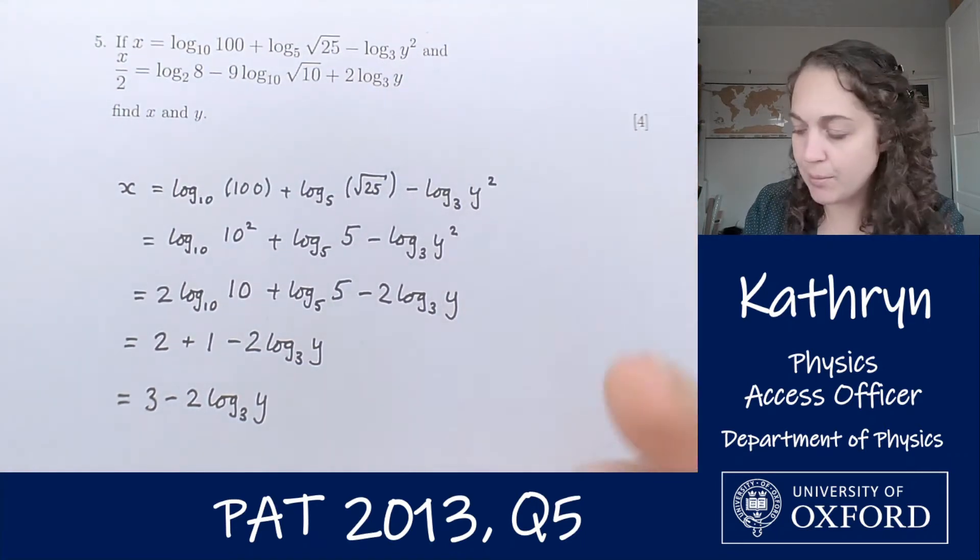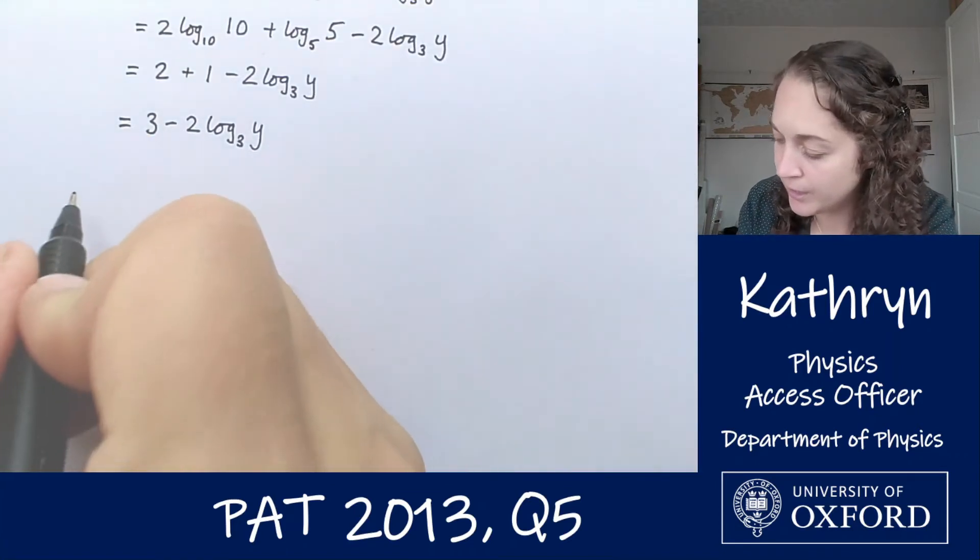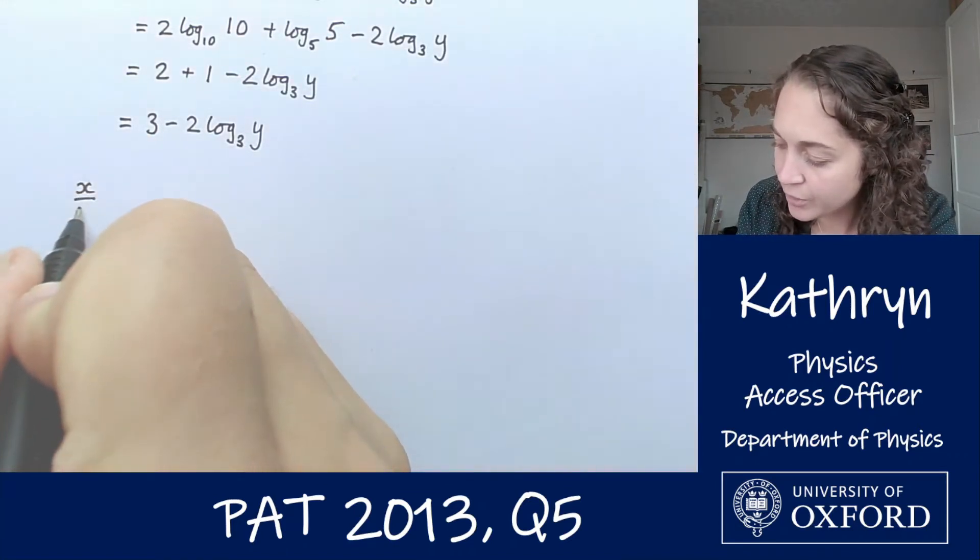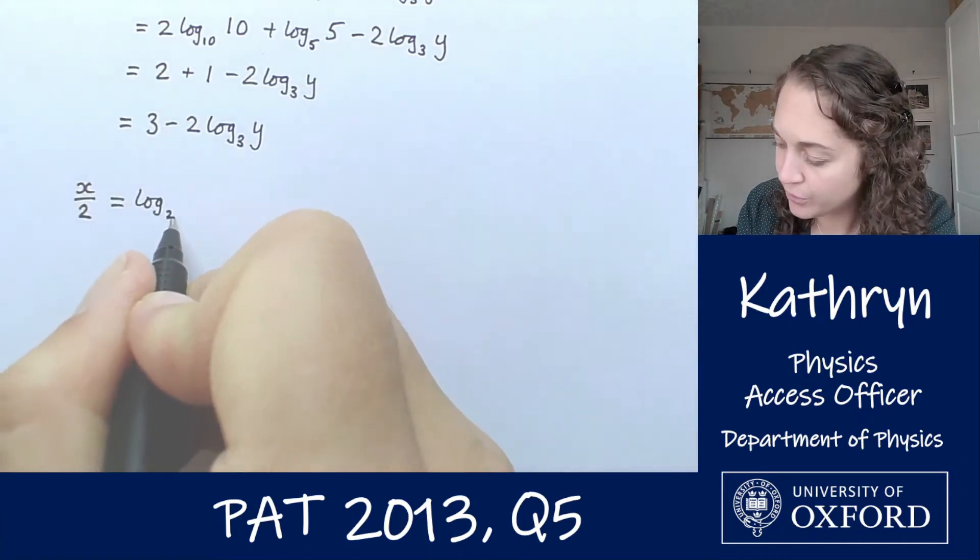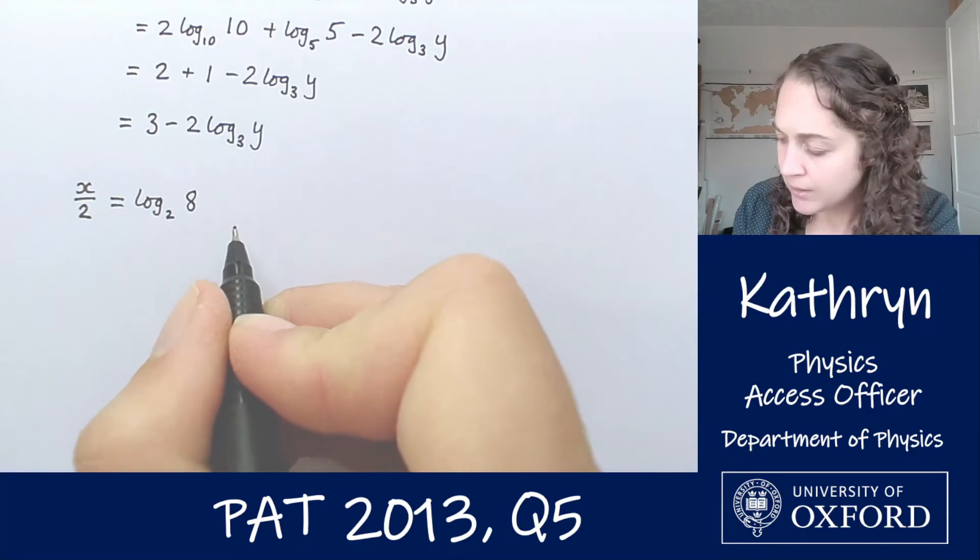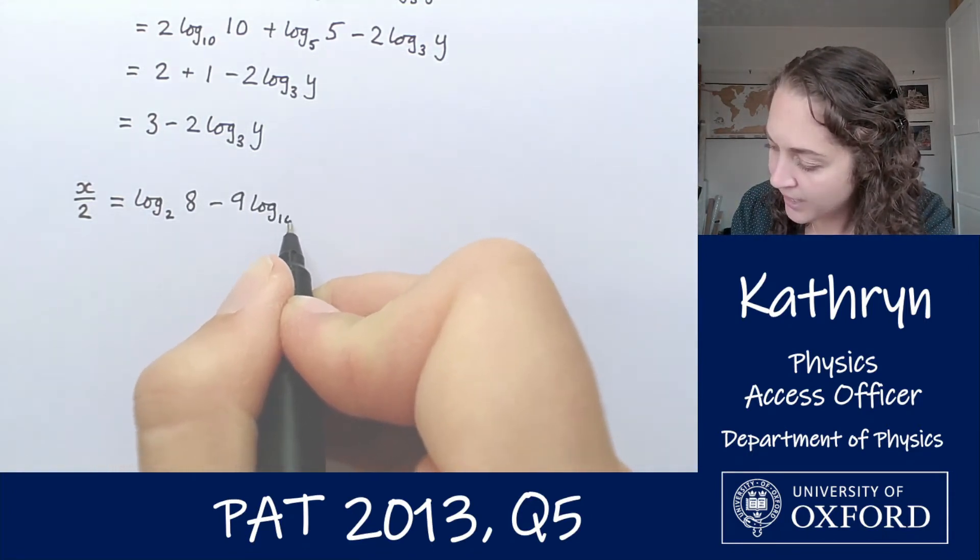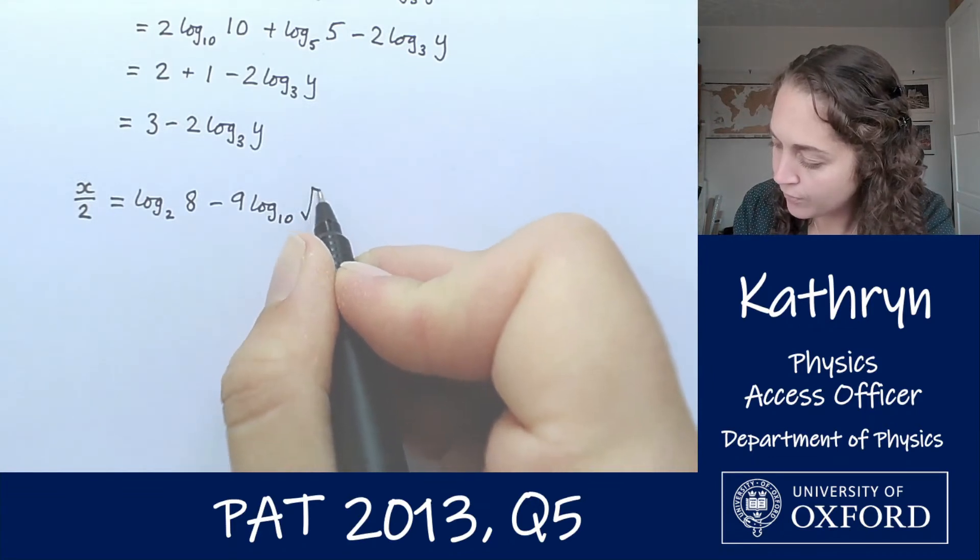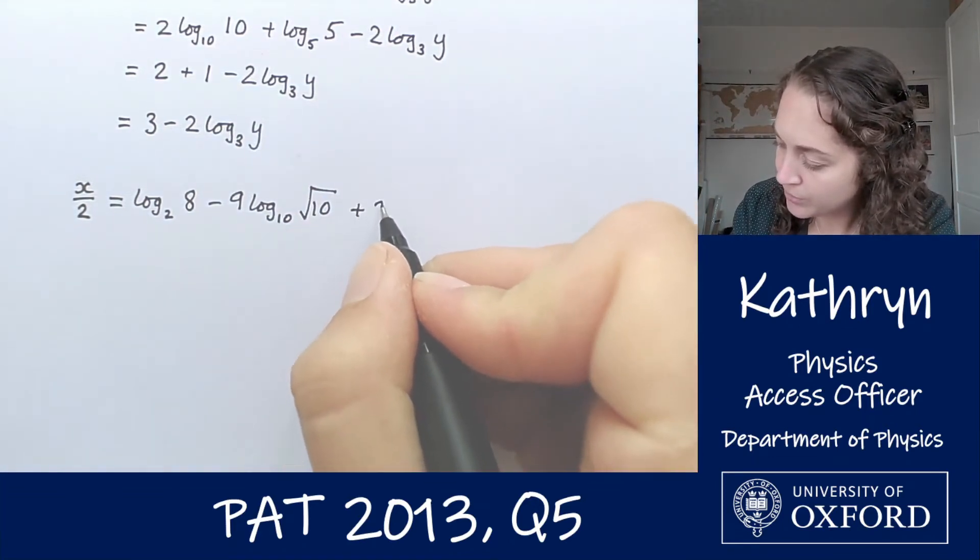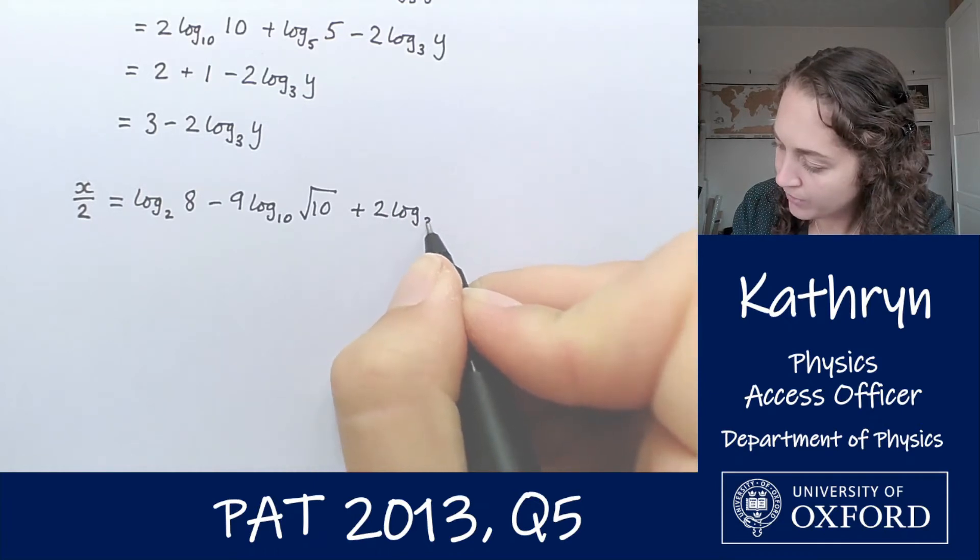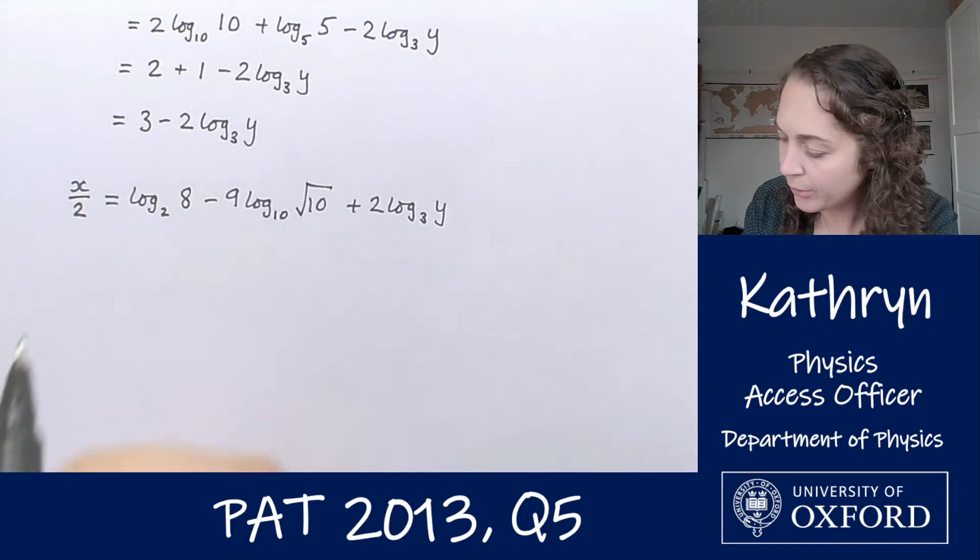So that was our first equation from the question. Now let's do the same kind of thing with our second equation. This time we've got x over 2 equals log base 2 of 8 minus 9 log base 10 of square root of 10 plus 2 log base 3 of y.